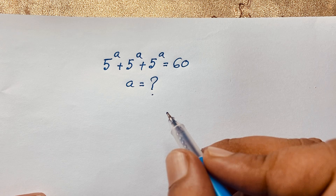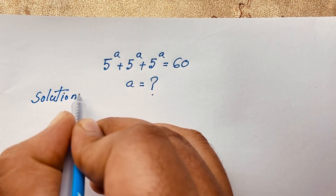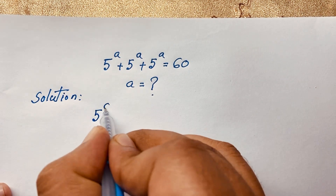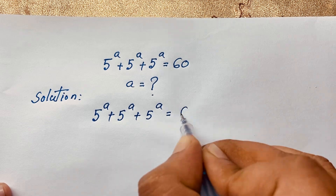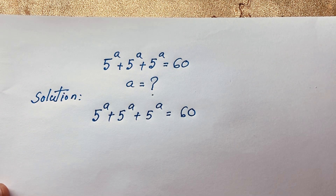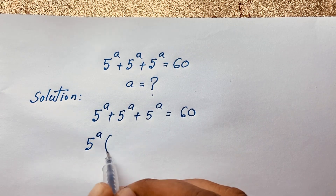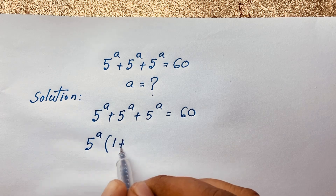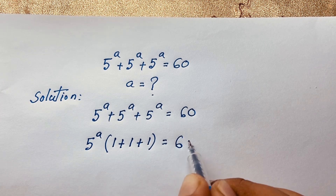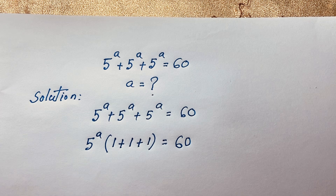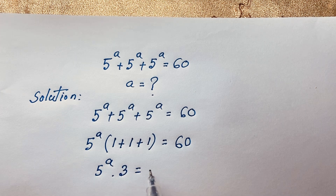How to solve this interesting math problem. Our question is 5 to the power A plus 5 to the power A plus 5 to the power A is equal to 60. You can see here 5 to the power A is common, so I factor it out: 5 to the power A times (1 plus 1 plus 1), which gives 5 to the power A times 3 is equal to 60.